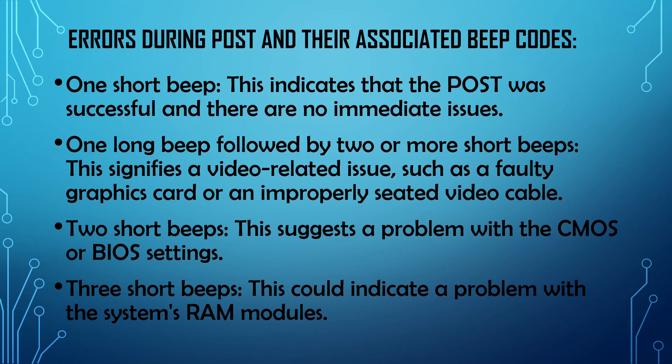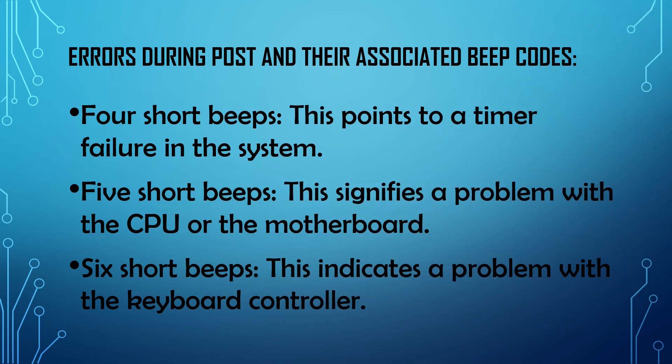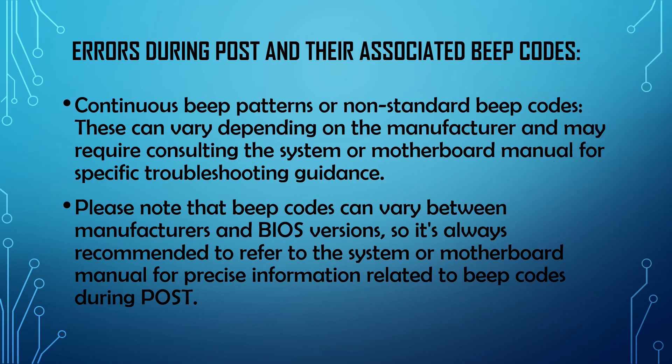Two short beeps: this suggests a problem with the CMOS or BIOS settings. Three short beeps: this could indicate a problem with the system's RAM modules. Four short beeps: this points to a timer failure in the system. Five short beeps: this signifies a problem with the CPU or the motherboard. Six short beeps: this indicates a problem with the keyboard controller. Continuous beep patterns or non-standard beep codes can vary depending on the manufacturer and may require consulting the system or motherboard manual for specific troubleshooting guidance.